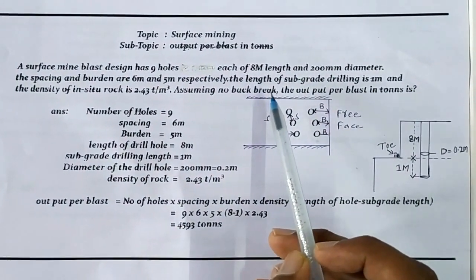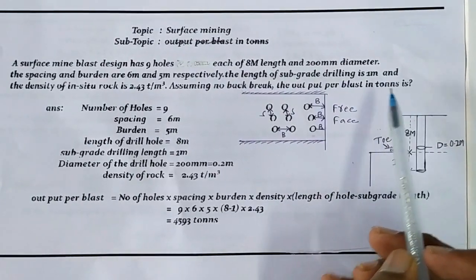Assuming no back break, what is the output per blast in tons? This is the question.